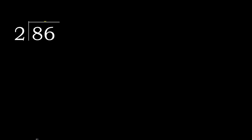86 divided by 2. 8 is not less, so we work with 8. 2 multiplied by which number is nearest to 8 but not greater? 2 multiplied by 5 is 10, which is greater. 2 multiplied by 4 is 8, which is not greater.